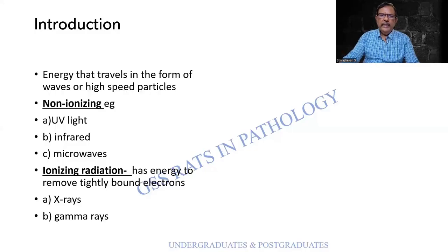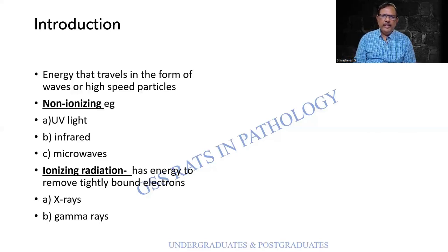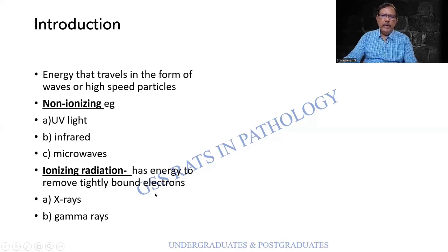Radiation is energy that travels in the form of waves or high-speed particles. It is divided into ionizing radiation and non-ionizing radiation. Examples of non-ionizing radiation include ultraviolet light, infrared, and microwaves, whereas ionizing radiation has the energy to remove tightly bound electrons and is more powerful — such as X-rays and gamma rays.